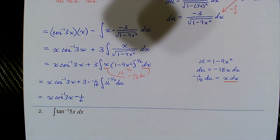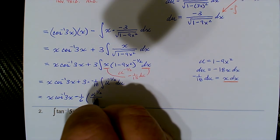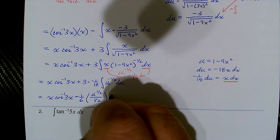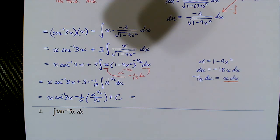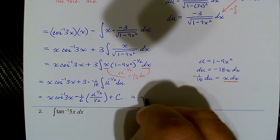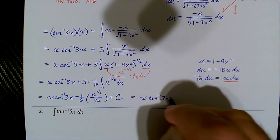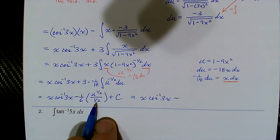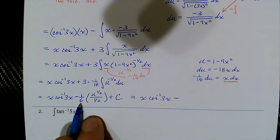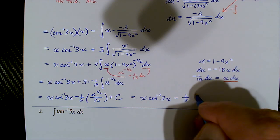Finishing up: we have x·arccos(3x), then minus — inverting the 1/2 gives 2, times 1/6 gives 1/3 — so minus 1/3, times (1 minus 9x²)^(1/2), plus the constant C. It's very important to recognize that the new integral fit the form for u^n.